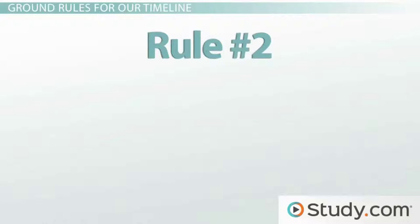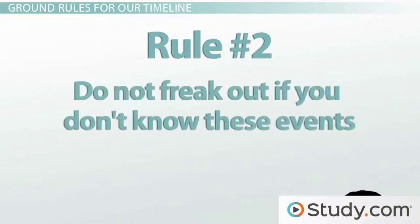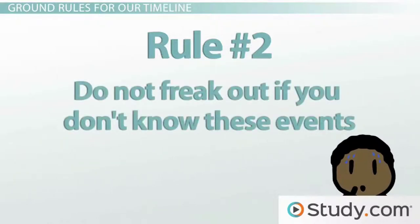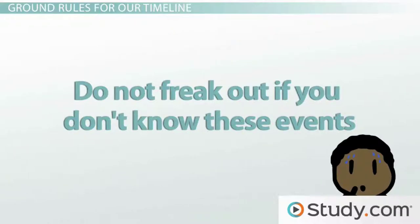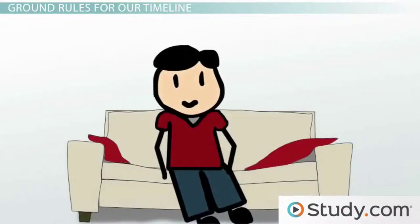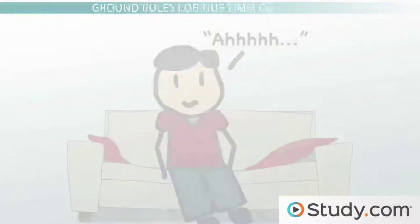This brings us to rule number two, the most important of our rules: do not freak out if you don't know these events. We've just begun and you're not expected to know them. This timeline is simply a tool of reference, a road map of sorts, to help keep track of the times as we delve into each event in future lessons. So for now, don't worry — we've got it all covered. Just take a deep breath and sit back and watch our timeline unfold.